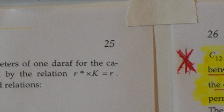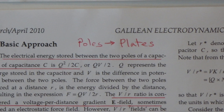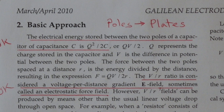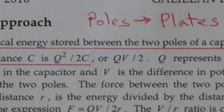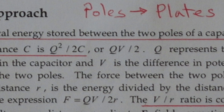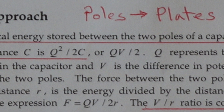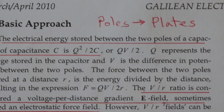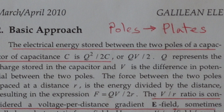Now let's go to page 25, the third page I wanted you to look at. He has some rather strange terminology I've never seen anywhere before. Under 'basic approach,' he talks about the electrical energy stored between the two poles of a capacitor. The value is correct, but what he's referring to as 'poles' — in the industry we call those the plates of a capacitor. A capacitor is two conductors separated by a dielectric, and we refer to those conductors as plates, not poles. I've never seen this terminology used anywhere except in this paper.